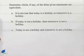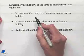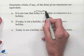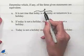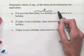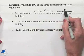Let's start by designating a few statements. We're going to say today is a holiday is statement P. Tomorrow is a holiday, we'll say is statement Q.